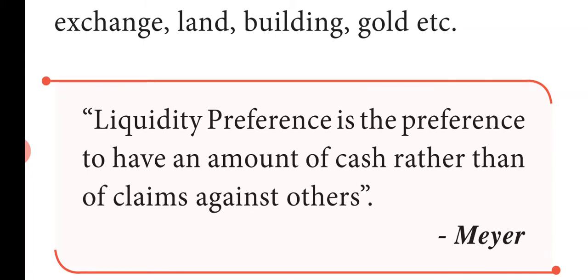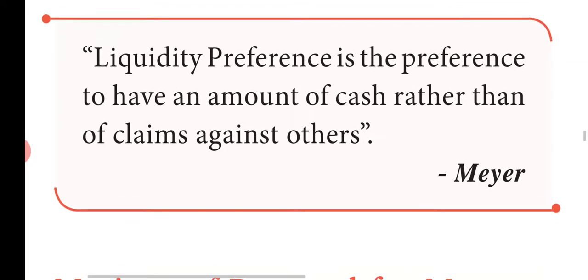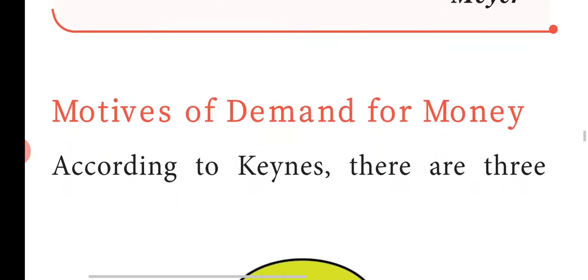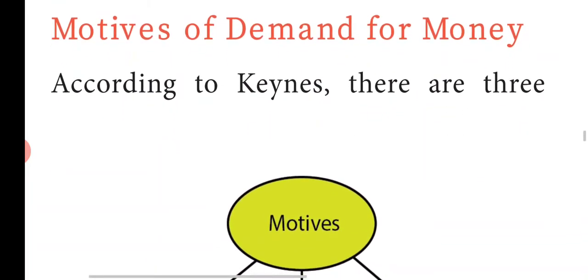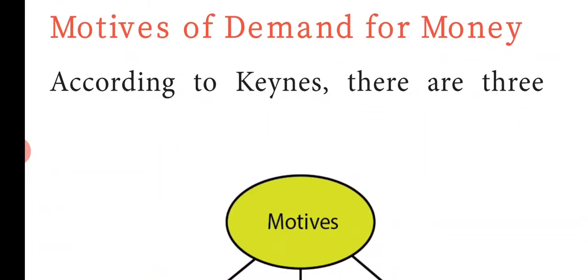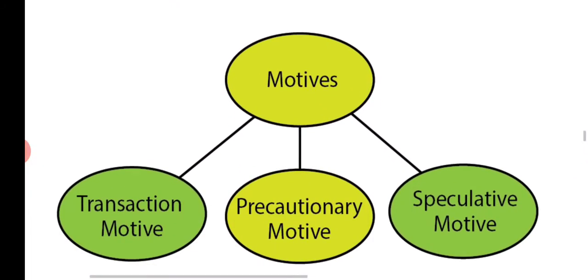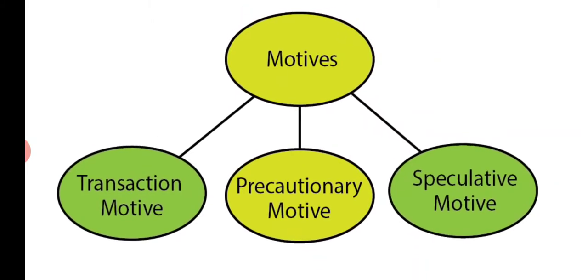Liquidity Preference is the preference to hold an amount of cash rather than other claims. There are three motives for demand for money: one is the transaction motive, second is the precautionary motive, and third is the speculative motive.